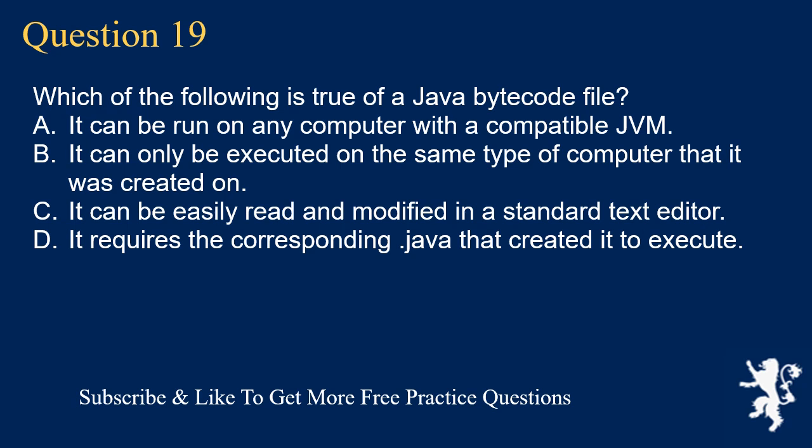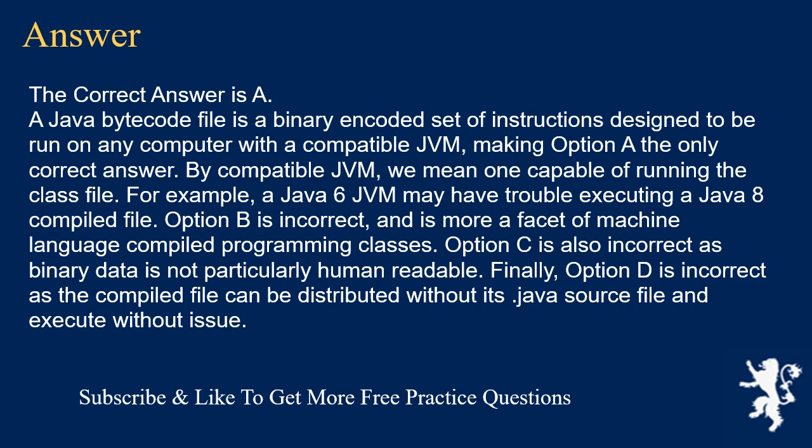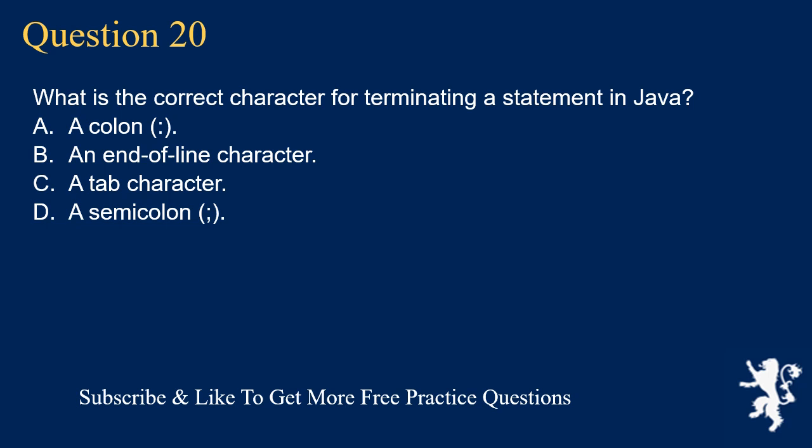Question 19: Which of the following is true of a Java bytecode file? A) It can be run on any computer with a compatible JVM. B) It can only be executed on the same type of computer it was created on. C) It can be easily read and modified in a standard text editor. D) It requires the corresponding .java source file to execute. The correct answer is A. A Java bytecode file is a binary encoded set of instructions designed to run on any computer with a compatible JVM. Option B is more a facet of machine language compiled programs. Option C is incorrect as binary data is not human readable. Option D is incorrect as compiled files can be distributed and executed without their source.